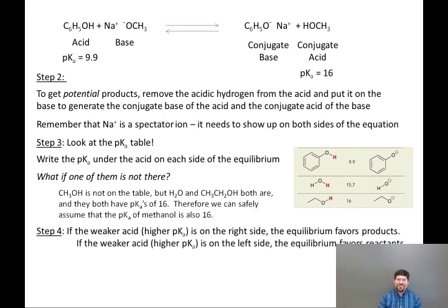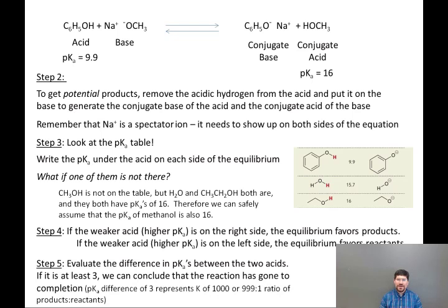Step four. If the weaker acid (higher pKa) is on the right side, the equilibrium will favor products. If the weaker acid (higher pKa) is on the left side, the equilibrium will favor reactants, which is another way of saying no reaction will take place. So in this case, these are going to be the products and a reaction will take place because we are generating the weaker acid and the weaker base on the right side.